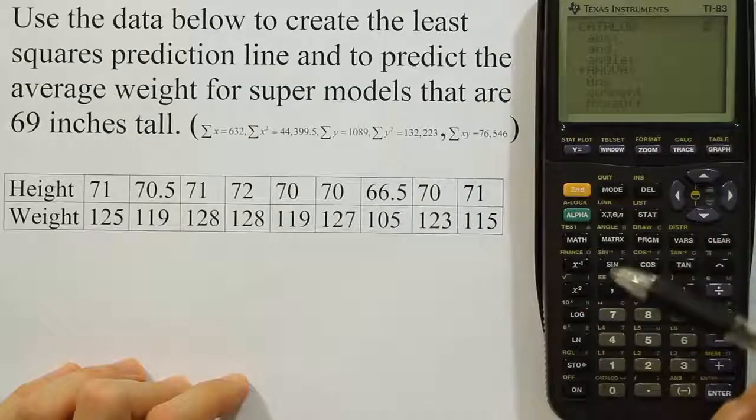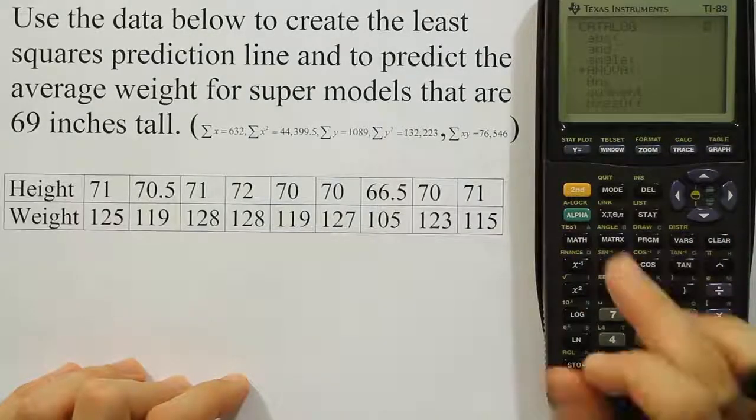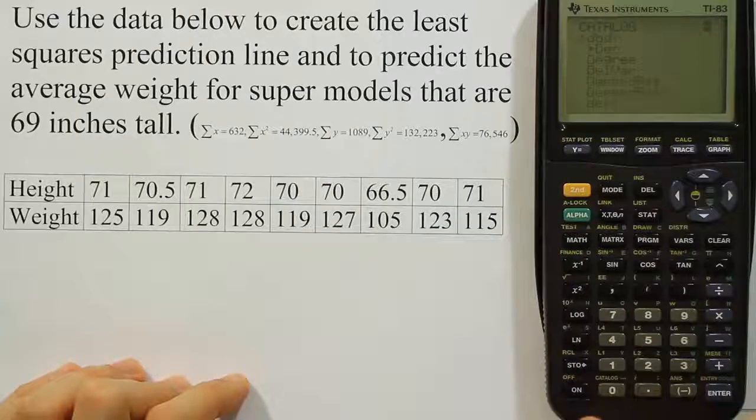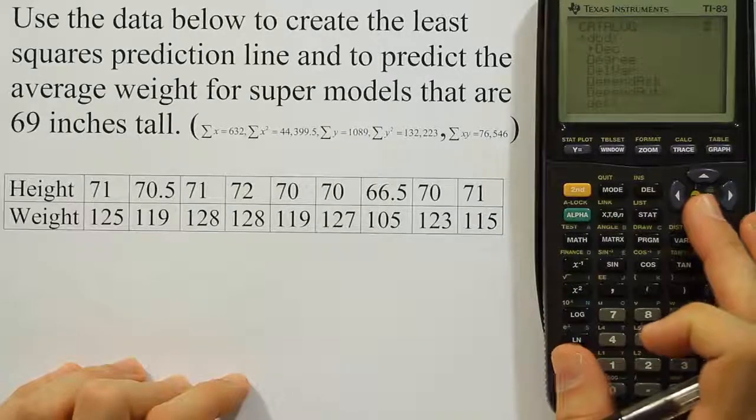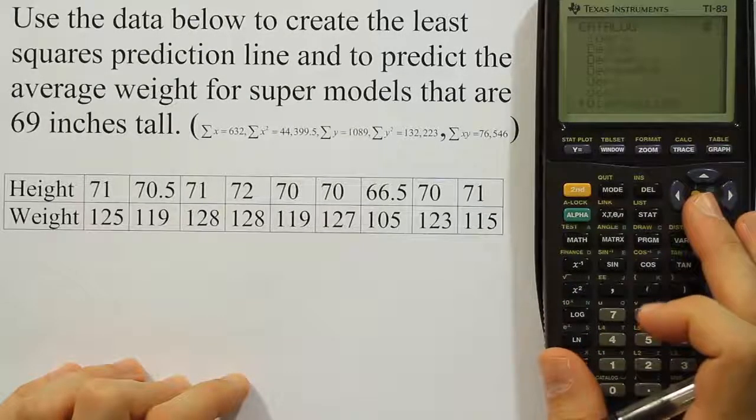That little D there indicates that if I push that right now it's going to go to where the D's are in the list, and if I scroll down I'm going to find something that says Diagnostics.